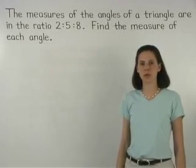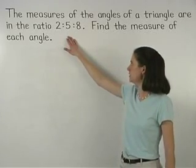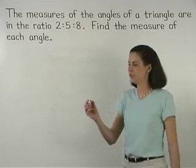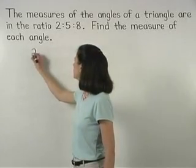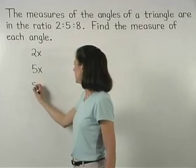Remember that when the ratio of the angles is 2 to 5 to 8, we can represent the angles as 2x, 5x, and 8x.